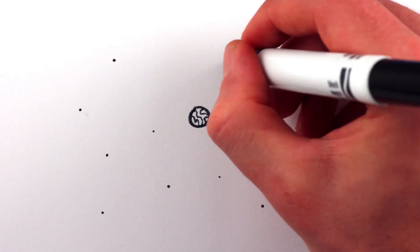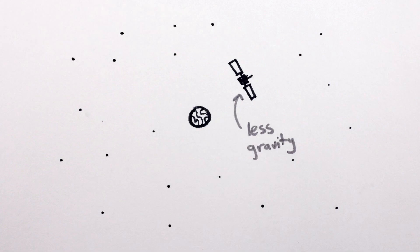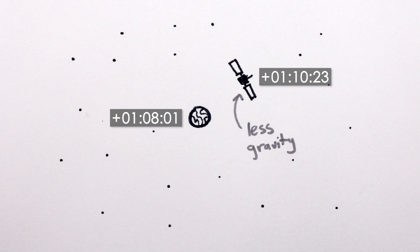On the other hand, GPS satellites high in orbit experience less of Earth's gravity, and thus travel noticeably faster through time than we do, which is why their clocks are calibrated to run slow.